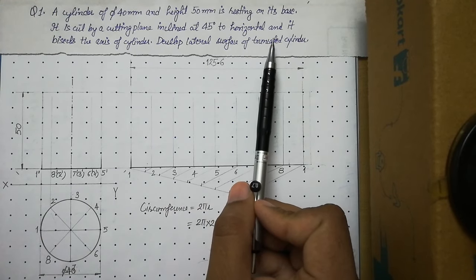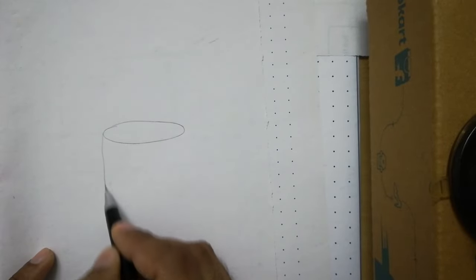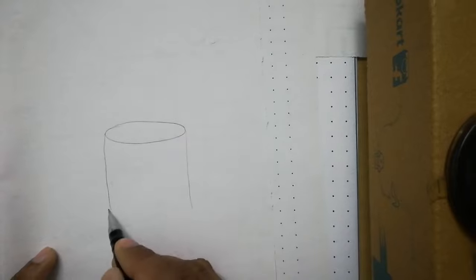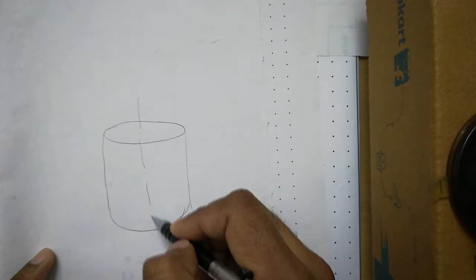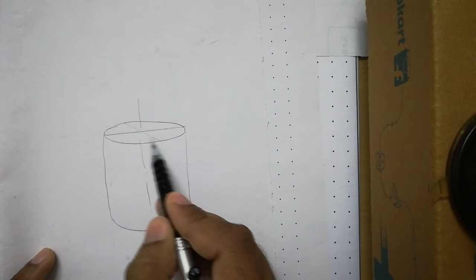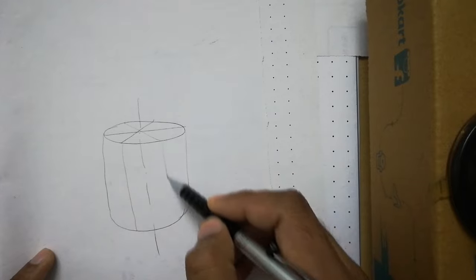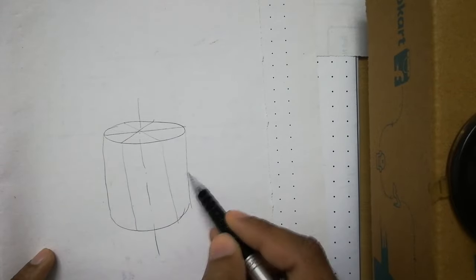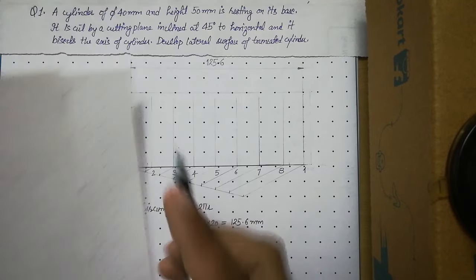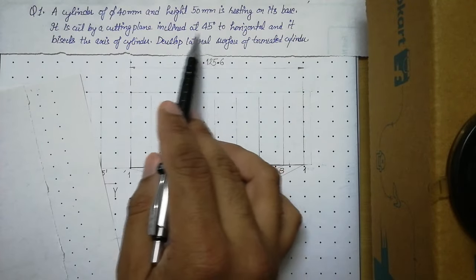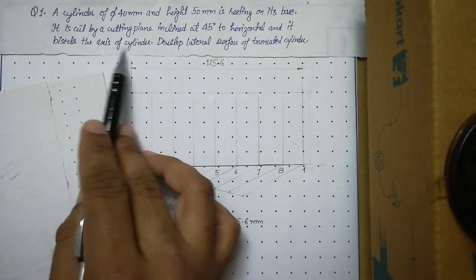The meaning of this is that we have a cylinder. This is the axis of the cylinder, and we have divided the top face of the cylinder into 8 equal parts — these are the generators on the surface of the cylinder, 8 generators, 3 at the back side. A cutting plane inclined at 45 degrees to horizontal bisects the axis of the cylinder.